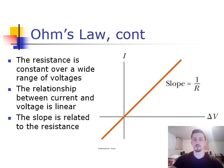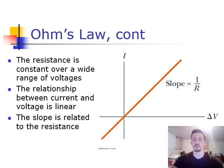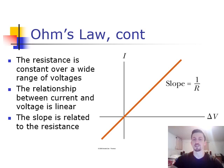We're going to look a little more in-depth at this graph. The resistance is constant over a wide range of voltages, so our R value isn't going to be changing. The relationship between current and voltage is linear. So when we have a graph with voltage on the x-axis and current on the y-axis, there's going to be a linear relationship between the two, and the slope of this graph is actually going to be equal to 1 over R. So the slope is related to the resistance of the circuit.